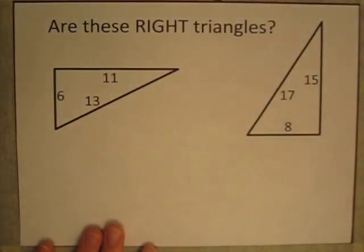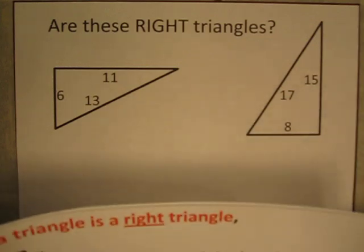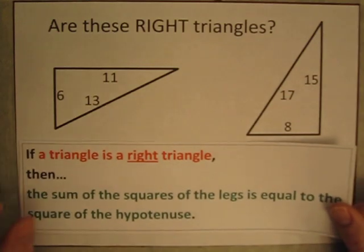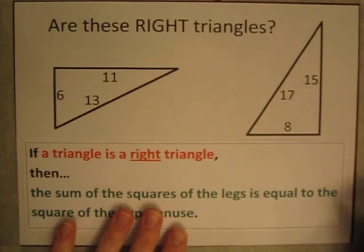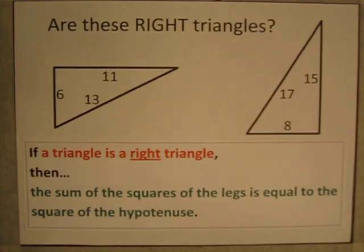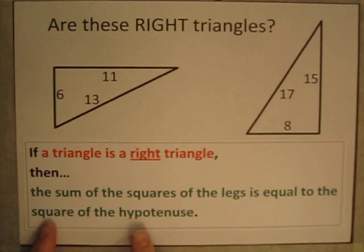Thankfully there is a way that we can know for sure, and that is by using the Pythagorean Theorem. The Pythagorean Theorem states that if a triangle is a right triangle, then the sum of the squares of the legs is equal to the square of the hypotenuse.